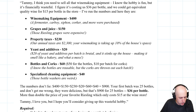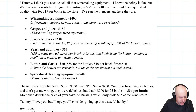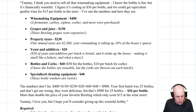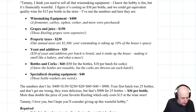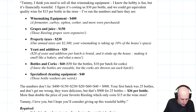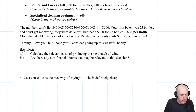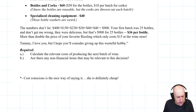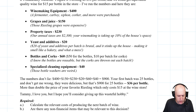Yeast and additives, $20 per batch — it stinks up the house making it smell like a bakery. Bottles and corks, $60 — $50 for the bottles, $10 for the corks. He notes the bottles are reusable but the corks are thrown out each batch. Specialized cleaning equipment, $40. The total of all those bolded numbers — $400 plus $150 plus $230 plus $20 plus $60 plus $40 — is $900.